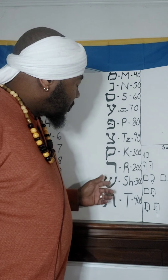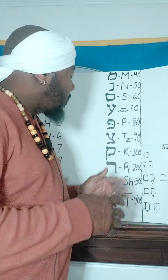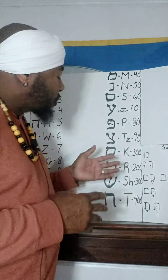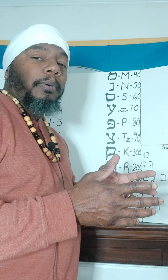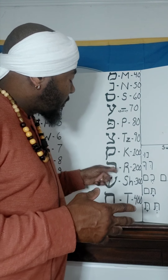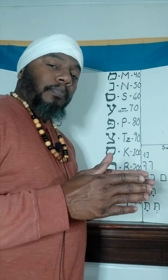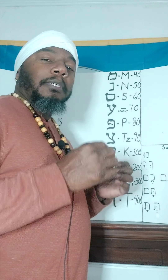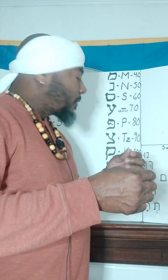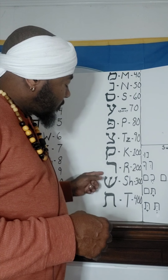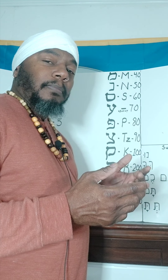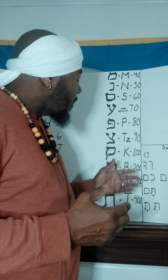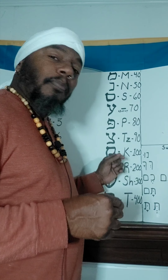The next letter is the Shen or the Sen. The only way you can tell the difference — which I do not have here at this moment — is where you will see a dot, either on the left or the right. A dot on the right gives you the SH sound, and if you move the dot to the left, it will be the S sound. But it has the same numerical equivalent, which is three hundred.